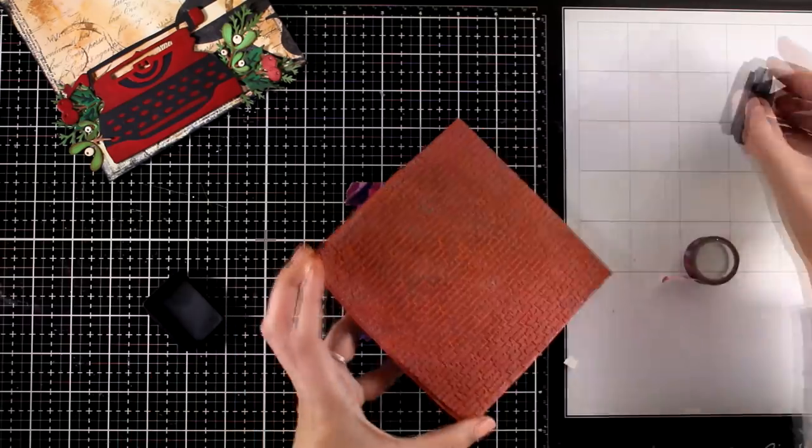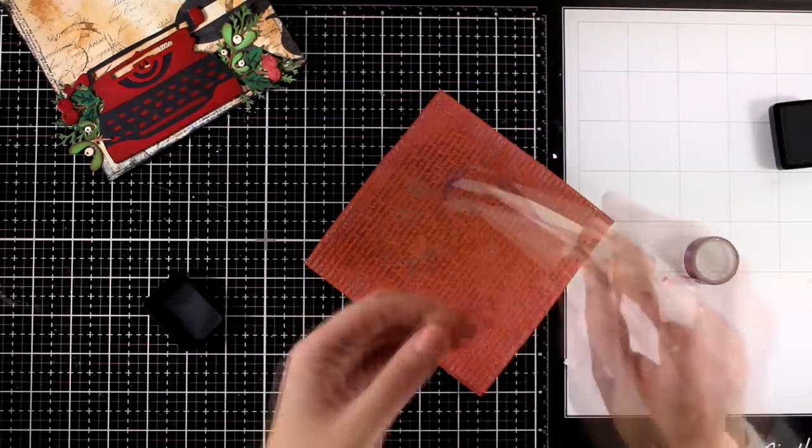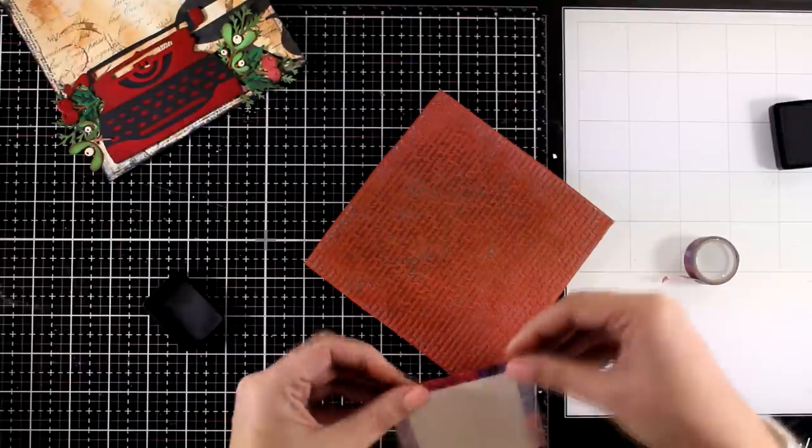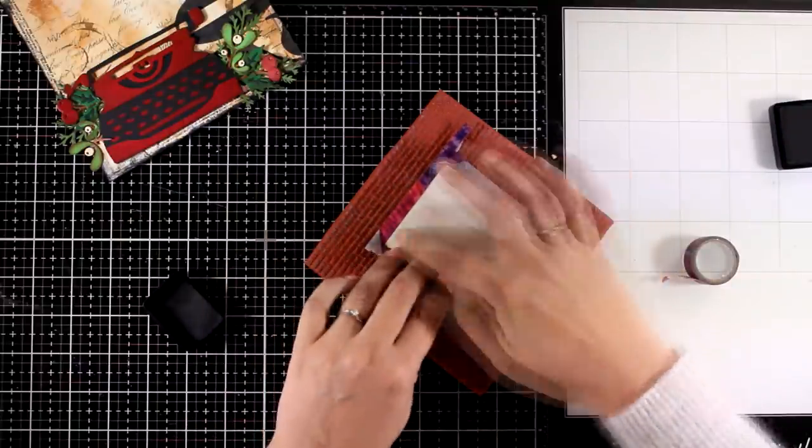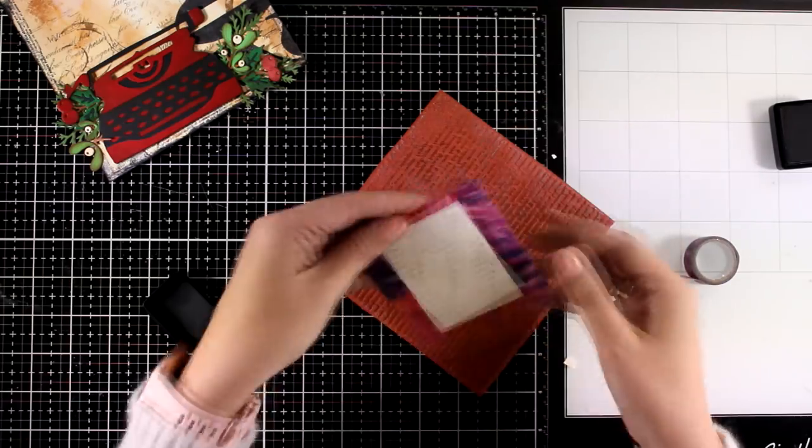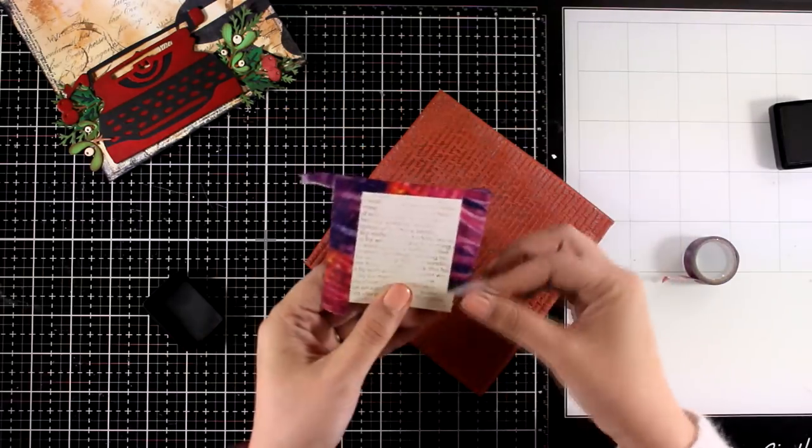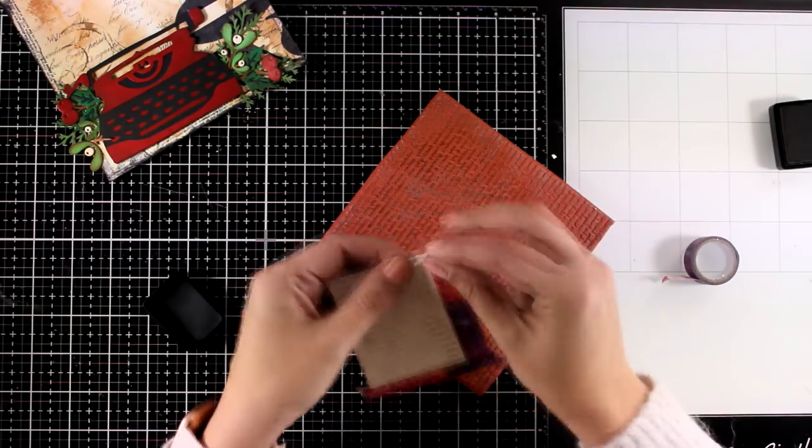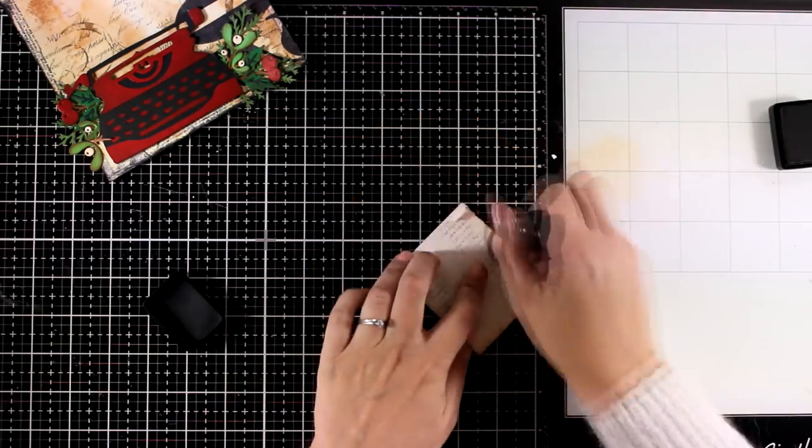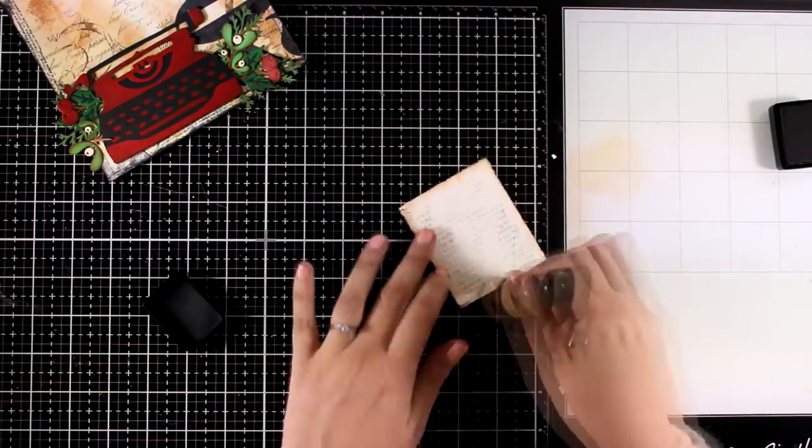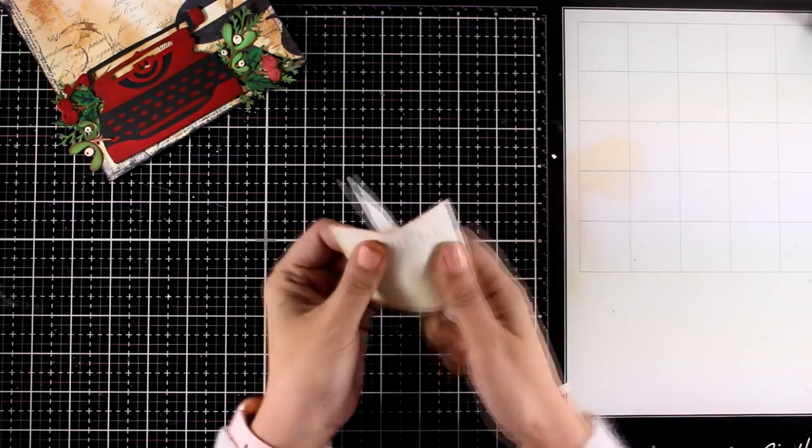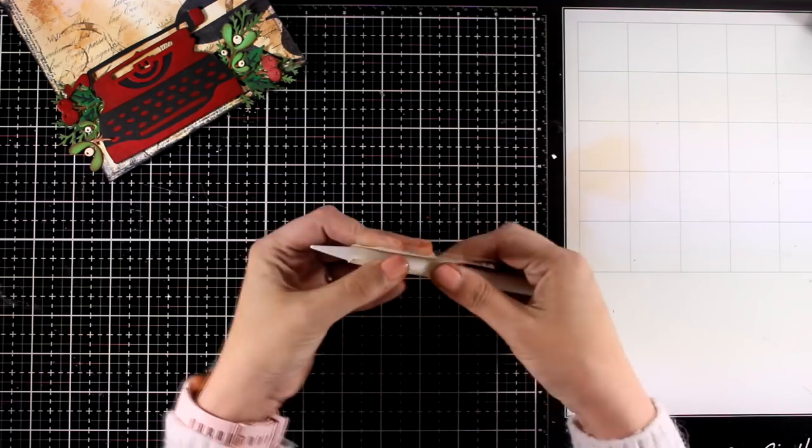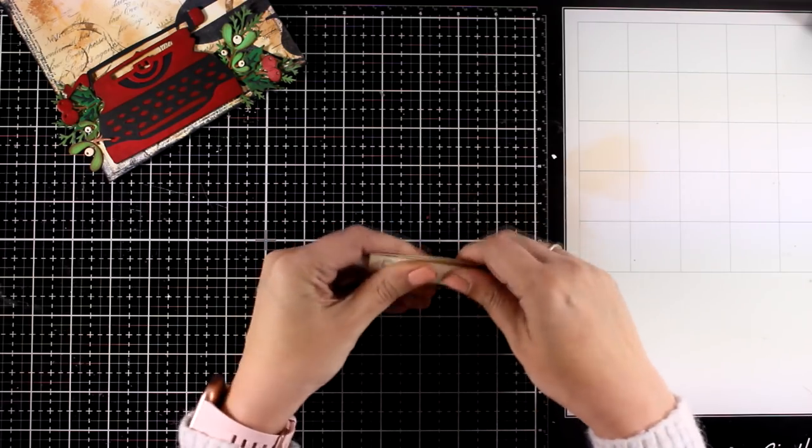I'm stamping with this rubber stamp that has sayings of Christmas. It's all about Christmas on this text. And I didn't go for the perfect impression, just like I always do with my art journals. I'm going to ink up the edges just a touch, and then I'm going to use my bone folder and add a curve on this piece.